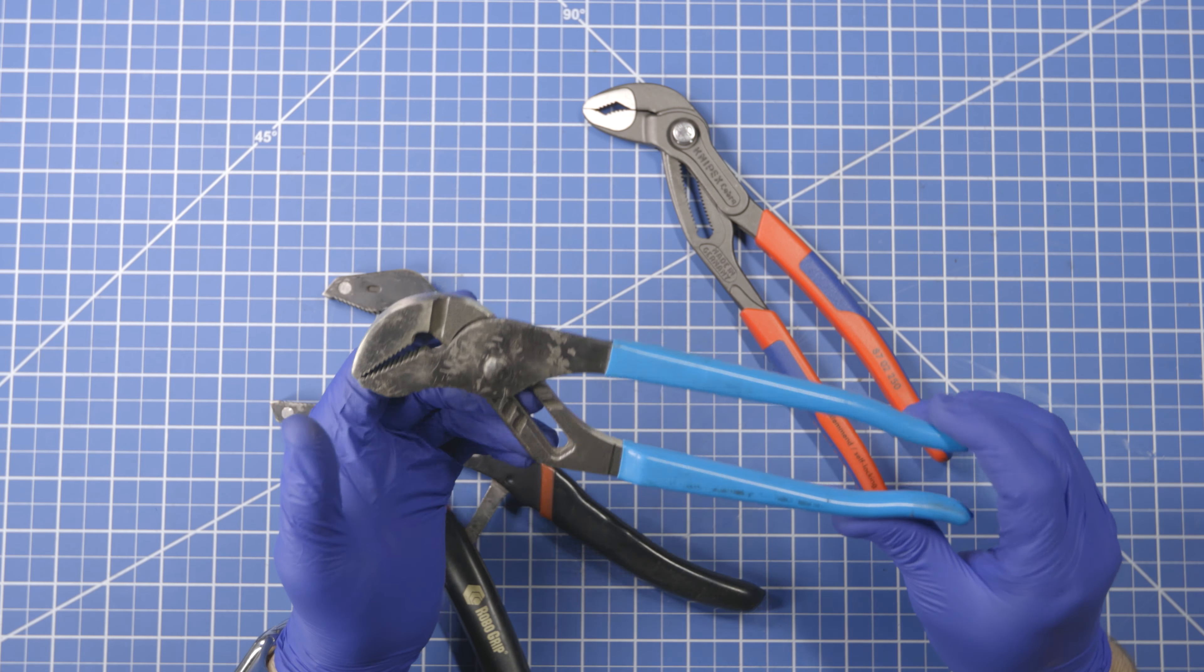The way you adjust the jaw width is you open the jaws all the way, which then takes this little fin and pulls it all the way away from those grooves. These grooves are the various depths. So it's open as far as it can go and then it can go in any slot in between.